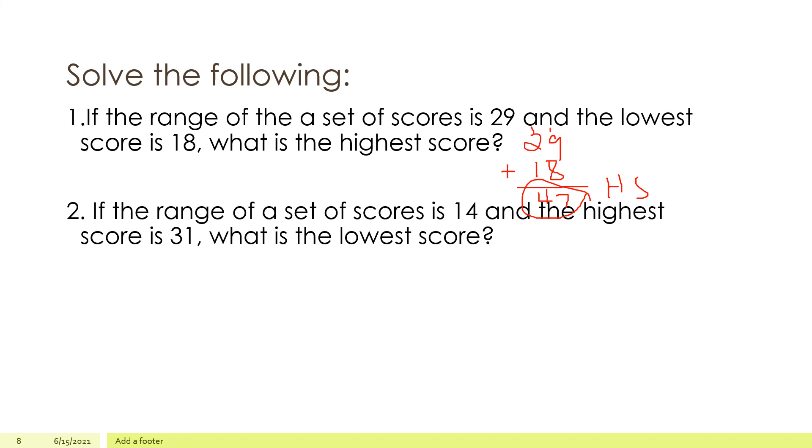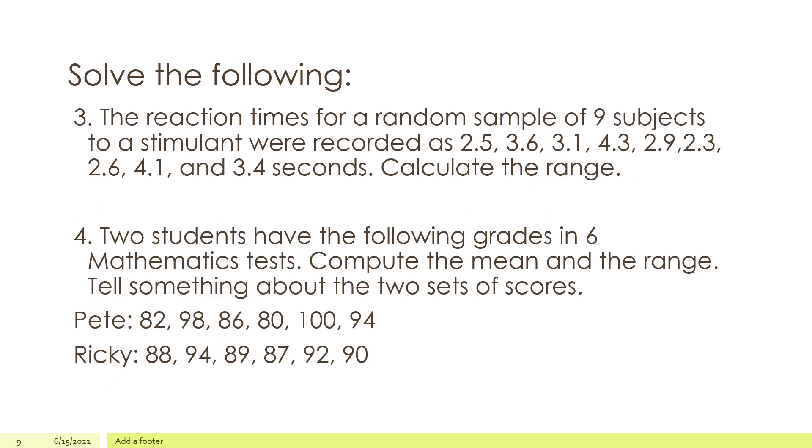If the range of the set of scores is 14 and the highest score is 31, what is the lowest score? So you have to subtract. 31, highest score minus the range. So we have 17 is the lowest score. Because 31 is the highest score and 14 is the range. Ganyan lang.